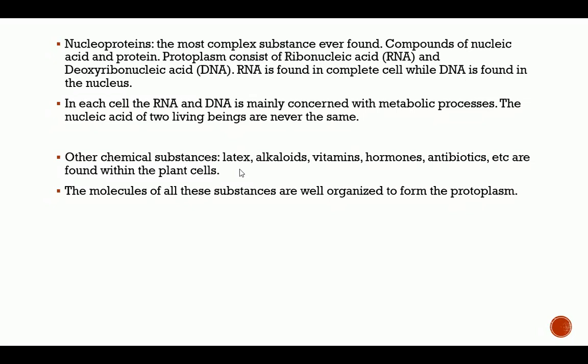RNA is found in the complete cell — both in the nucleus and in the cytoplasm — while DNA is found only in the nucleus. The RNA and DNA are mainly concerned with metabolic processes. The nucleic acids of two living beings are never the same because of protein differences — since nucleic acid is a constituent of protein. Other chemical substances such as latex, alkaloids, vitamins, hormones, and antibiotics are also found within plant cells, and the molecules of all these substances are organized to form the protoplasm.